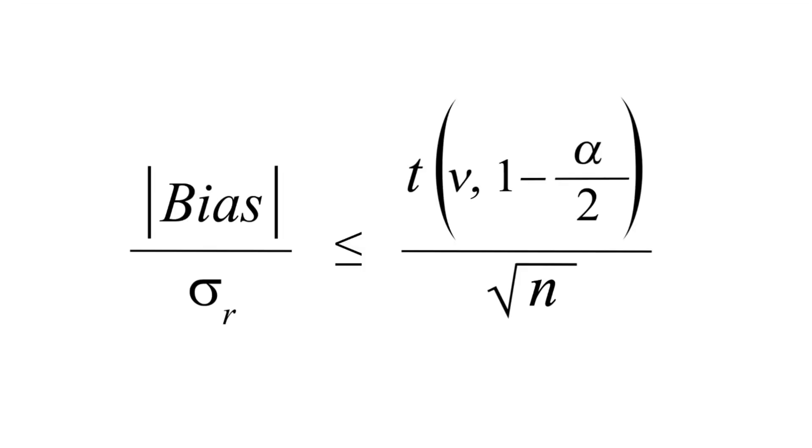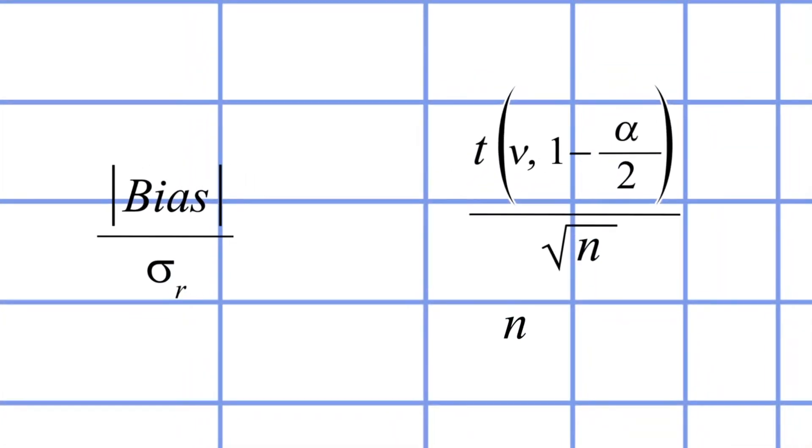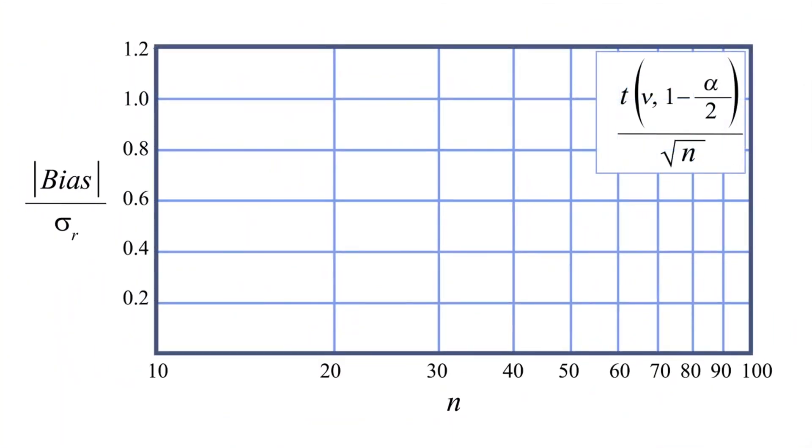To demonstrate the second problem, we will take a look at a graph of the right side of the formula. This graph shows how the right side of the formula decreases when the number of measurements increases. This means that the criteria will be harsher if we decide to raise the number of repeated measurements above the bare minimum and eventually it will approach zero.